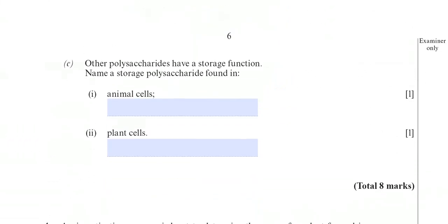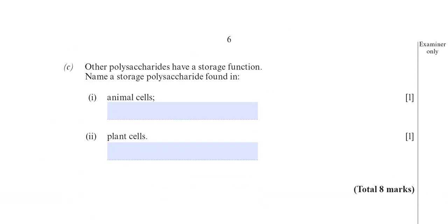Moving on to the last part of this question, part C. Other polysaccharides have a storage function. Name a storage polysaccharide found in animal cells. So the storage polysaccharide in animal cells that you need to know about is glycogen. Glycogen is a polysaccharide made up of alpha glucose. The plant equivalent of that is starch, which is also made up of alpha glucose. But the structure of starch and the structure of glycogen are different in many ways, but there are some similarities. The question isn't asking you about the structure of those polysaccharides, it's just the name of them in plants and animals. And there's the answers.